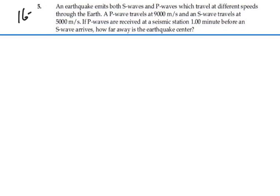Here's problem 16.5. An earthquake emits both S waves and P waves which travel at different speeds through the earth. A P wave travels at 9,000 meters per second and an S wave travels at 5,000 meters per second. If P waves are received at a seismic station one minute before an S wave arrives, how far away is the earthquake center?